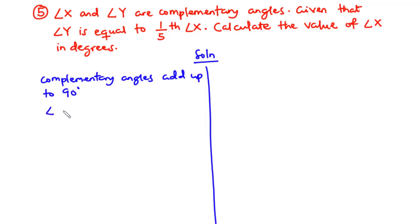Therefore, angle x plus angle y is equal to 90 degrees. Now let's call this equation 1.